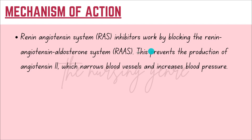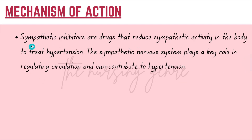ACE inhibitors and renin-angiotensin system inhibitors work by preventing the production of angiotensin 2, which narrows blood vessels and increases blood pressure. Sympathetic inhibitors are drugs that reduce sympathetic activity in the body to treat hypertension. The sympathetic nervous system plays a key role in regulating circulation and can contribute to hypertension, so sympathetic inhibitors reduce that controlling action.